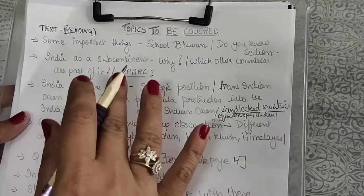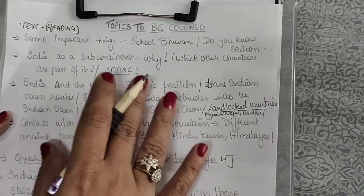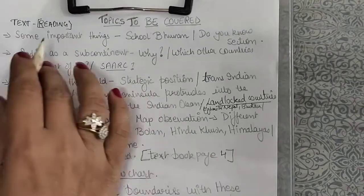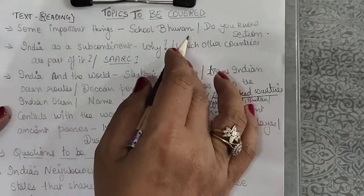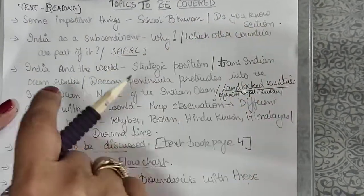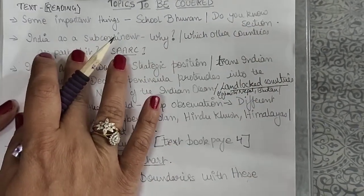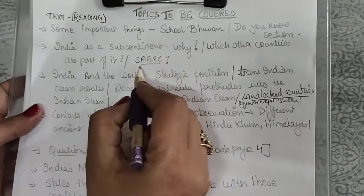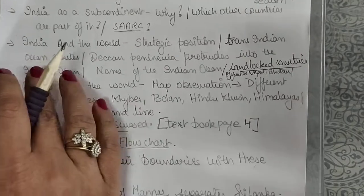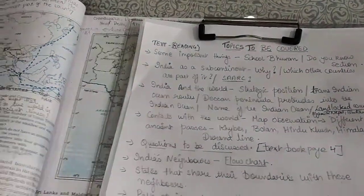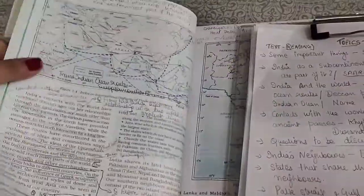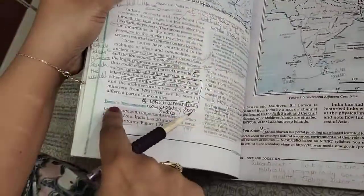Hello children, we are back with video 2, part 1 of Geography Chapter: India Size and Location. Today I'm going to explain the last two topics. In this video we are going to cover the following topics. As usual, we'll start with the textual reading, then discuss India as a subcontinent, which other countries are there, and a brief intro about the SAARC organization. Then India and the World, and India's neighbors.